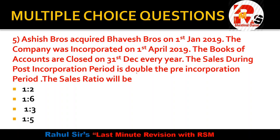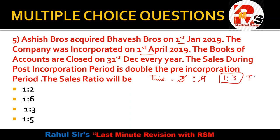Question number 5 is a calculative type question related to the sales ratio from the chapter of Pre and Post Incorporation (PPI). Ashish Brothers acquired Bhavesh Brothers on 1st January 2019. The company was incorporated on 1st April 2019. Books of accounts are closed on 31st December every year. The sales during the post-incorporation period is double. First, let's calculate the time ratio.